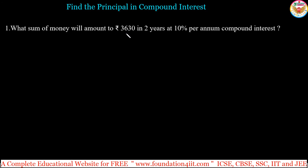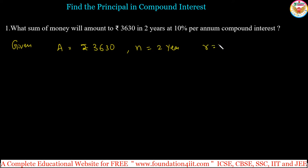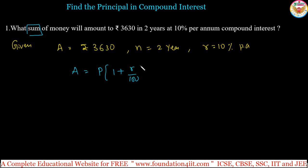Here, the amount is given as 3630. Writing the given data clearly makes the problem easier. Amount is 3630, n is 2 years, and r is 10 percent per annum, compounded annually. We have to find out what sum — that is, what principal — will become 3630 in 2 years at 10 percent per annum. The formula is: A equals P into (1 plus r by 100) to the power n.